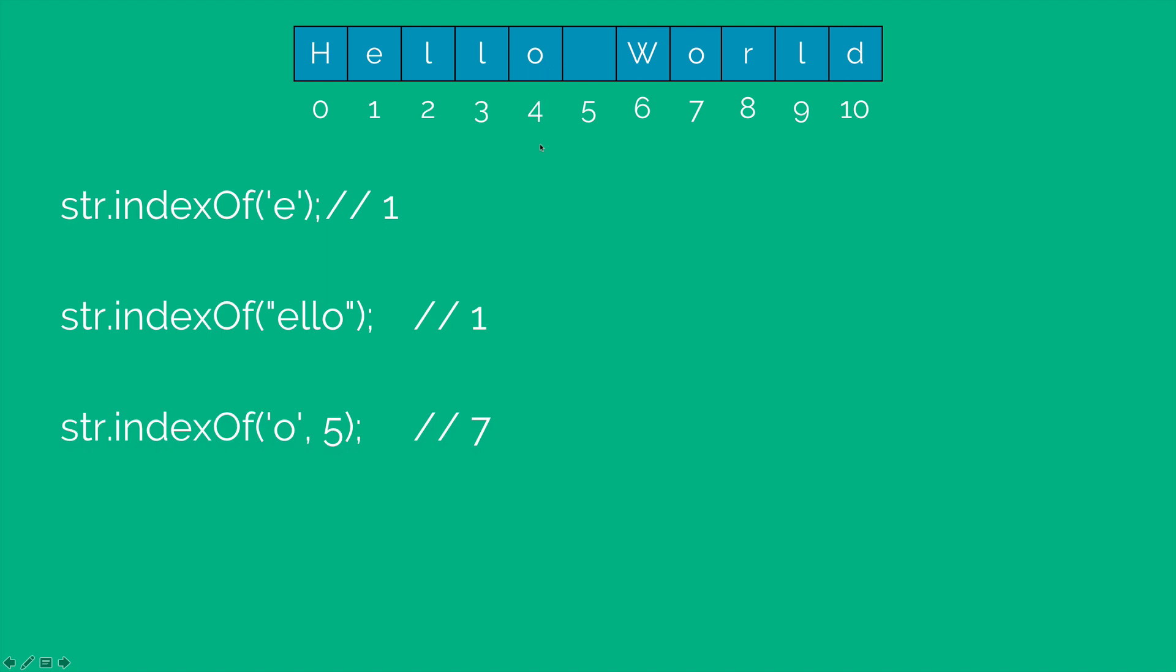Now if I say indexOf o comma 5, notice that o appears for the first time here at position 4. But I am simply telling the indexOf method to skip the five positions in the beginning and then start looking for o. Therefore the first place where it finds o is going to be 7, which is returned over here.